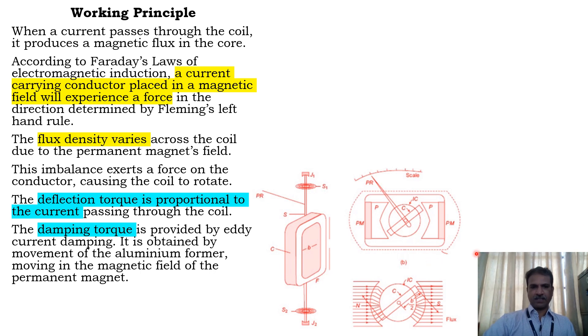The damping torque is provided by eddy current damping. It is obtained by the movement of the aluminum former moving in the magnetic field of the permanent magnet.